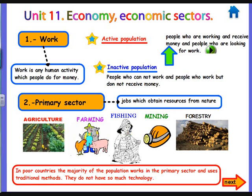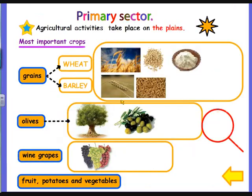Let's have a look at agriculture. Here we have a few crops. Agriculture activity takes place on the plains. Remember, the plains are fertile regions which are usually vast, big extensions and flat.